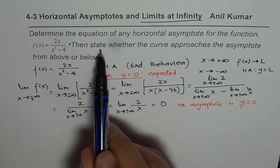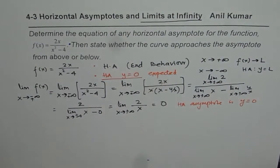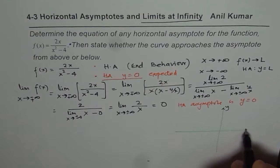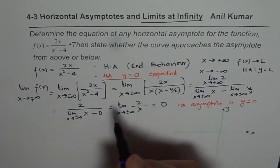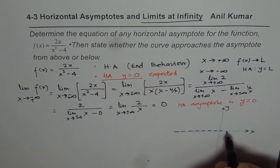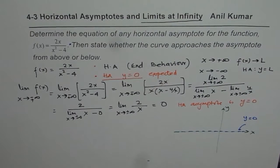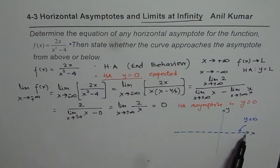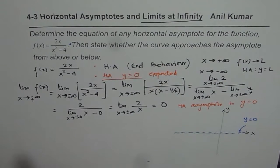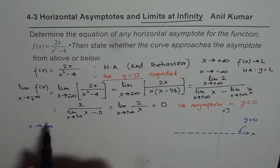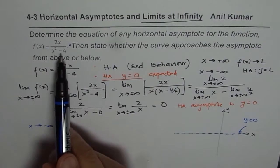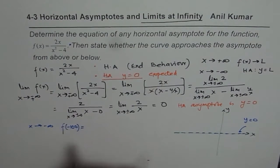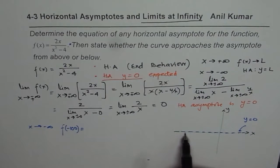Now let us do the second part: state whether the curve approaches the asymptote from above or below. We have found that the horizontal asymptote is y = 0 on the x-y axes. We need to find whether we are approaching from above or below this line as x approaches negative infinity or positive infinity. When x approaches negative infinity, we look at a large negative number like minus 100.